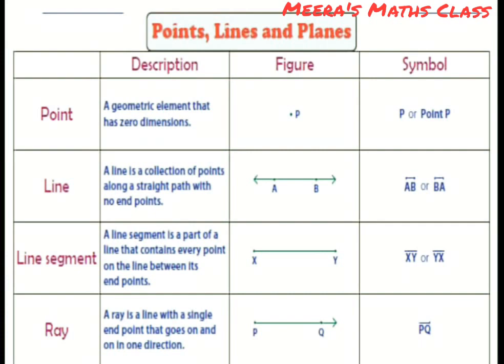Now these all are the description and figure and you can see how it is written, the symbol. First one is point. Let's see what it is once again. A geometry element that has zero dimensions, that means I have already explained you. And how the figure is, it's just a point and it is named as P here for example. How it is written? Symbol P, or it is written as point P.